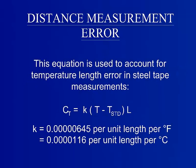Temperature variation is one of the forms of natural error that occurs on steel tape. This equation is used to account for that. Temperature correction equals a constant K multiplied by the difference between the ambient temperature and the temperature at which the tape was standardized at, then multiplied by the total length measured.